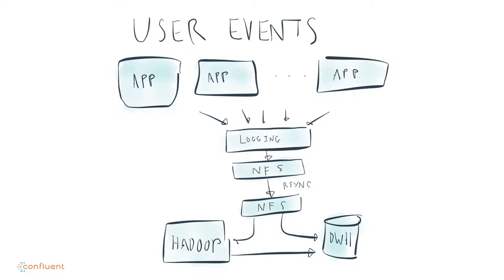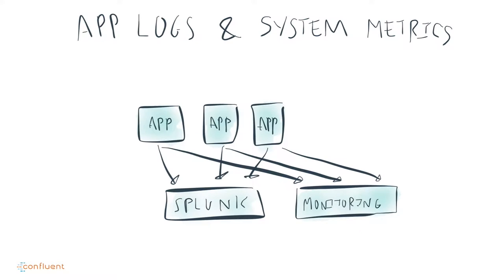We also had logging or user events — activities that happened in the business. We would log them out and aggregate these logs. It's more complicated than this: there were data centers, rsync would happen, NFS devices would fill up and overflow, and eventually data would get into Hadoop. Then we had a whole bunch of data about our data centers — operational stuff, monitoring data like Splunk and application logs. That stuff never made it to Hadoop at all. It just went to some monitoring system.